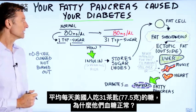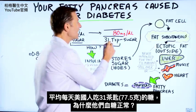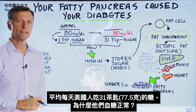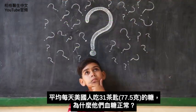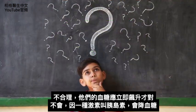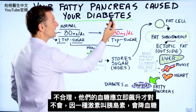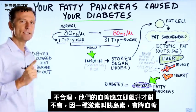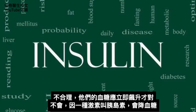An average American consumes 31 teaspoons of sugar. But why do they have normal blood sugars? You would think that the blood sugar would go up immediately. Well, it doesn't because of one thing — a hormone called insulin.